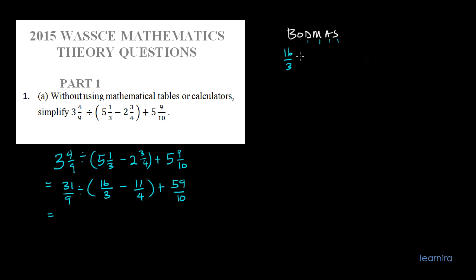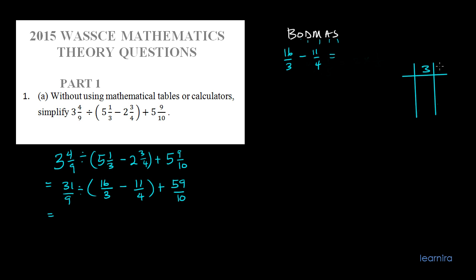We have 16 over 3 minus 11 over 4. To simplify this, we need to find the LCM of 3 and 4. After finding the LCM, we multiply the individual fractions by the LCM, then divide by the LCM. We'll draw a table and put the denominators 3 and 4.